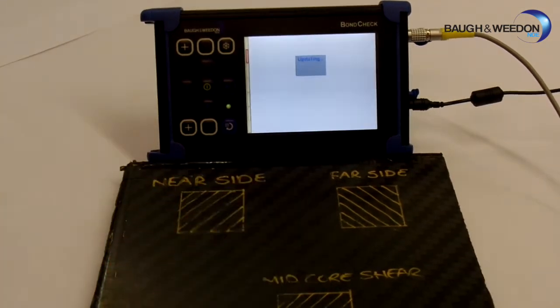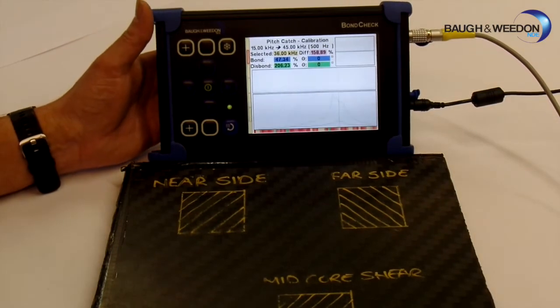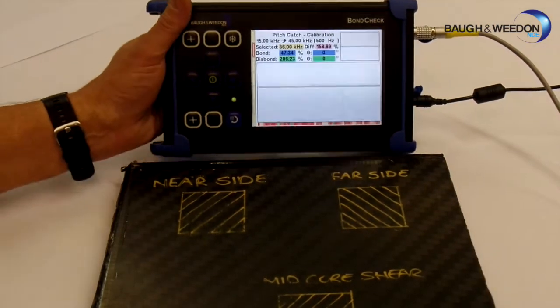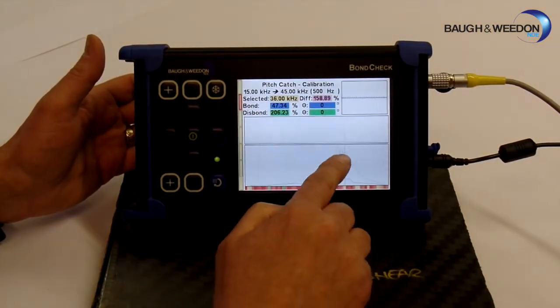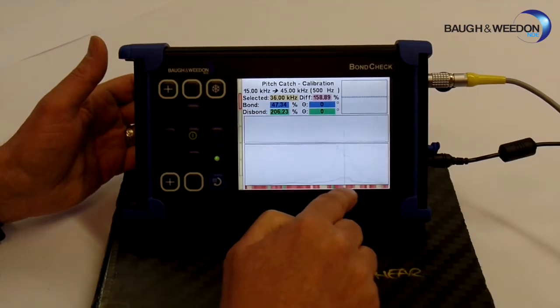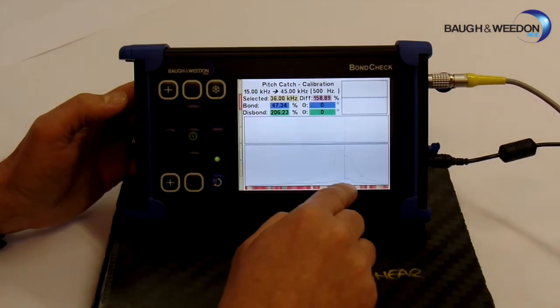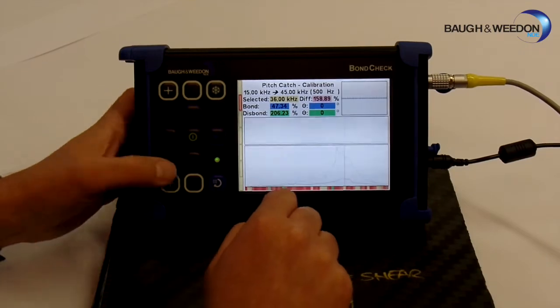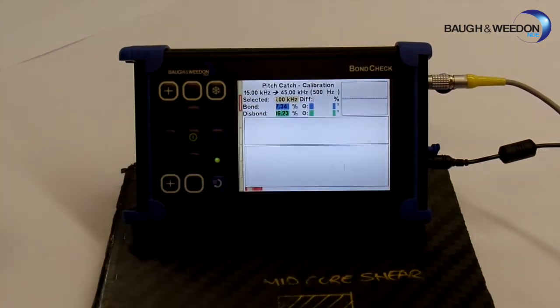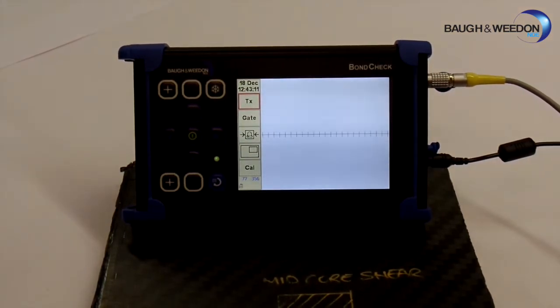So that is the actual calibration finished as such. But what it has done there is, I will just bring it closer, what it has done is it has picked the frequency where the largest amplitude difference is, and also the quality. It looks at a quality signal as well. Now the system has picked this one as its best option, so what we are going to do is select that.